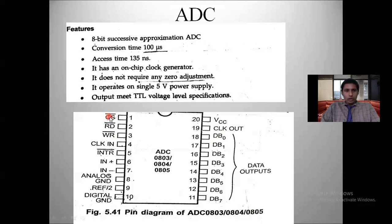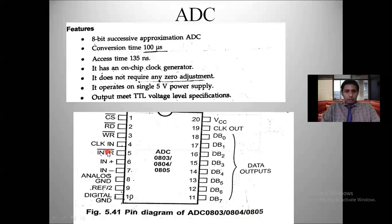CS bar is activated with the help of an external decoder or address lines from the processor. Write bar activating means the ADC is receiving analog data; read bar activating means the processor reads the digital data from DB0 to DB7 after conversion is complete. The other important pin is INTR bar — the interrupt request signal. INTR bar must be HIGH during analog-to-digital conversion, and when conversion is completed, INTR bar goes LOW. Based on this, the 8086 processor knows whether the ADC conversion is completed or not.